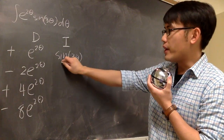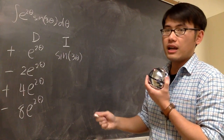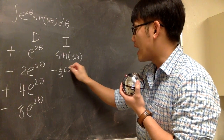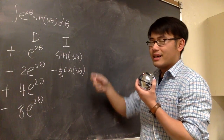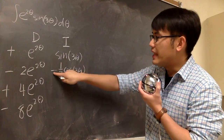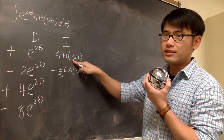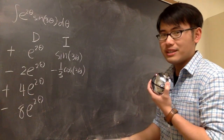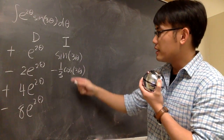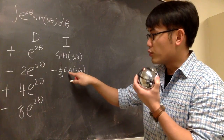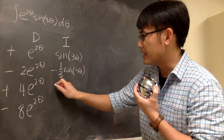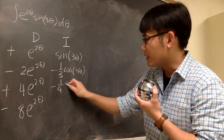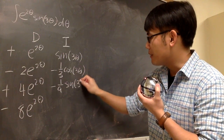Now let's look at integrating sine of 3 zeta. If you integrate it once, you get negative 1 third cosine of 3 zeta — the antiderivative of sine is negative cosine. Don't forget: because the inside is 3 zeta, we divide by 3, which means multiply by 1 over 3. Then we integrate again. The antiderivative of cosine is positive sine, so the sine stays. Dividing by 3 again gives negative 1 over 9 sine of 3 zeta.